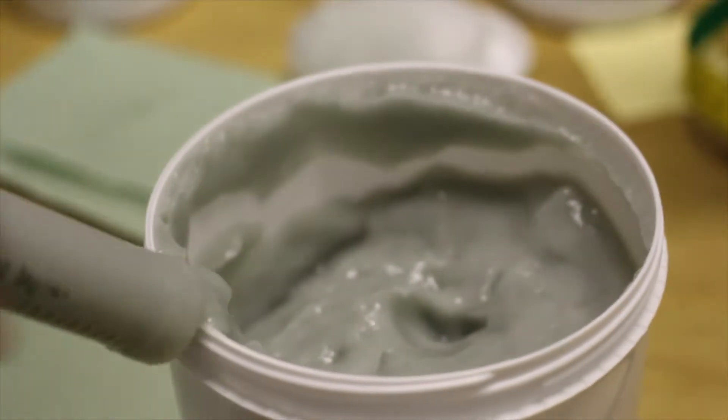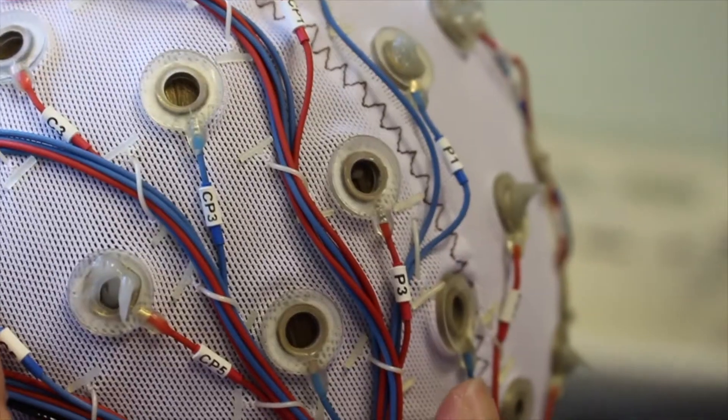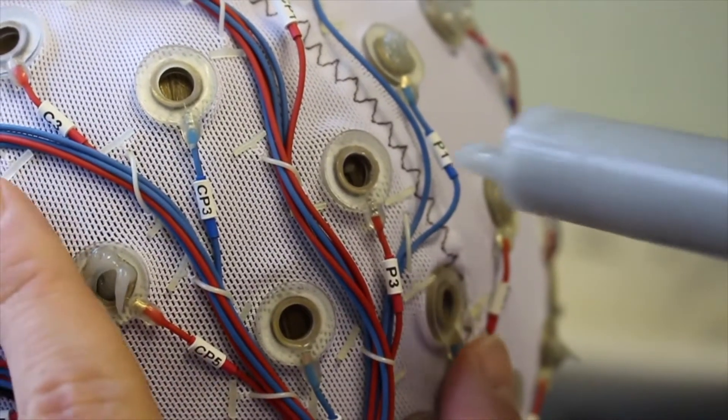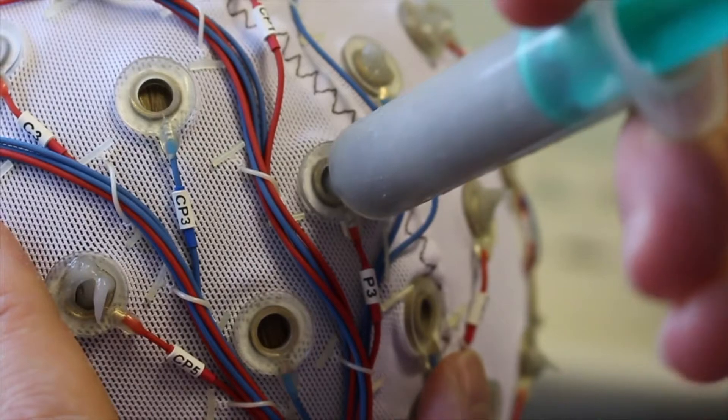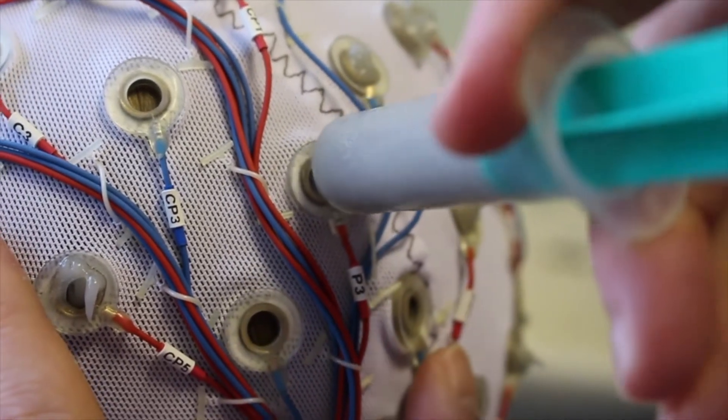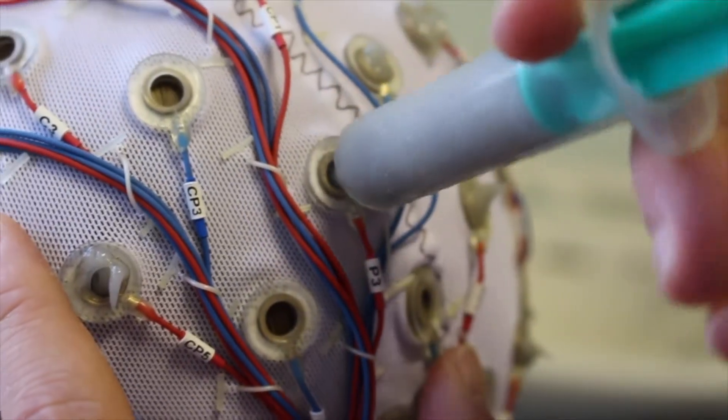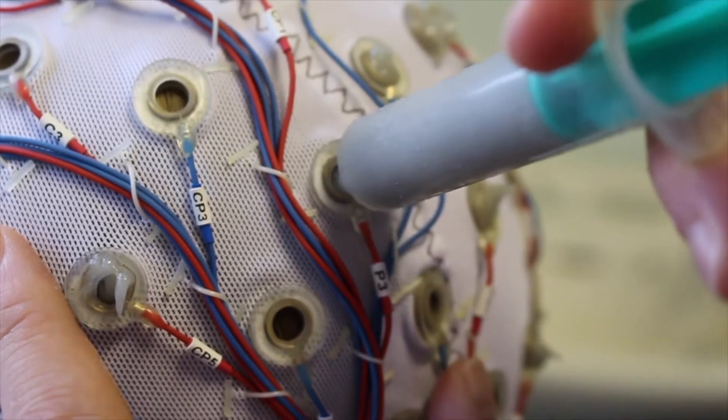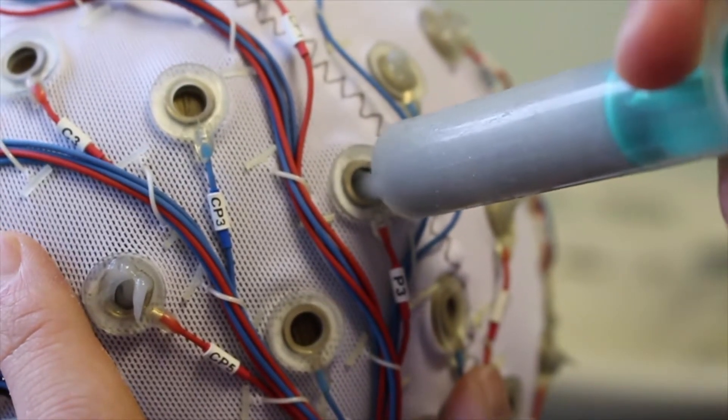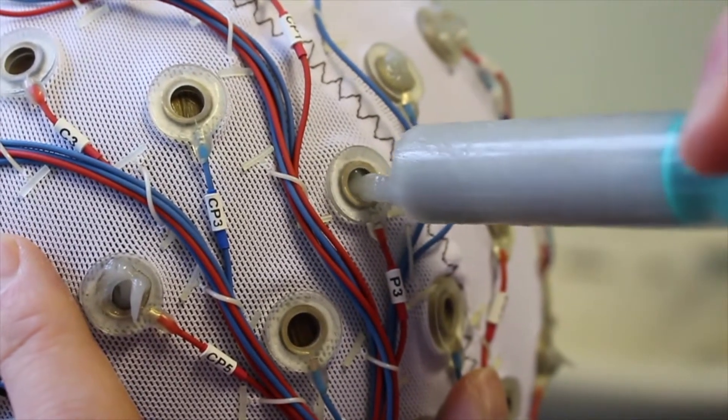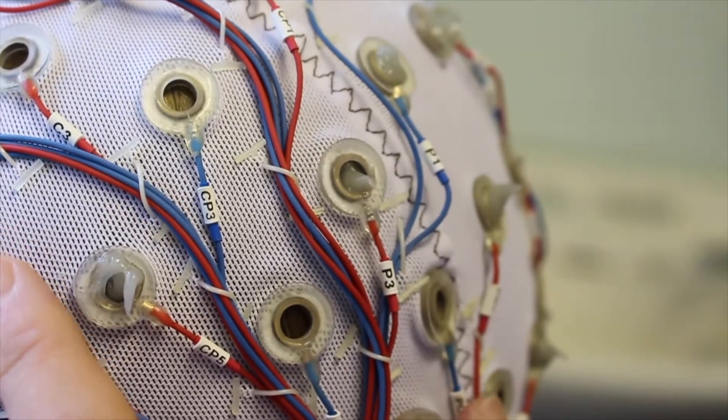First, place a towel over the participant's shoulders to avoid getting any gel onto their clothes. Once done, gently insert the syringe into an electrode using the tip to part the hair out of the way and help you reach the scalp. Carefully squeeze out some gel while slowly pulling the syringe back out. Your aim is to create a bridge between the electrode and the scalp.